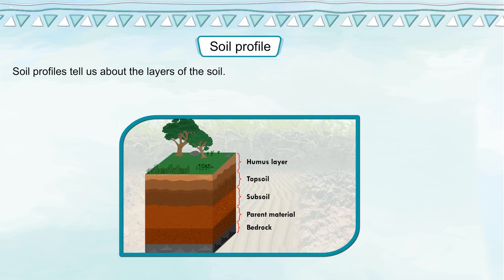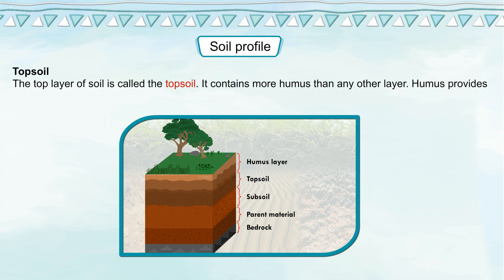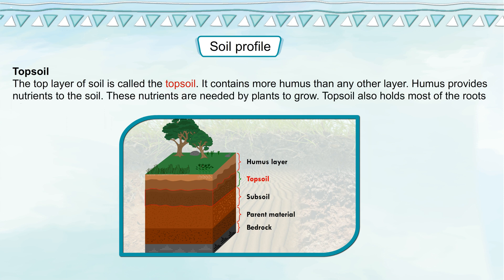Soil Profile. Soil profiles tell us about the layers of the soil. Topsoil: the top layer of soil is called the topsoil. It contains more humus than any other layer. Humus provides nutrients to the soil, which are needed by plants to grow. Topsoil also holds most of the roots of plants.